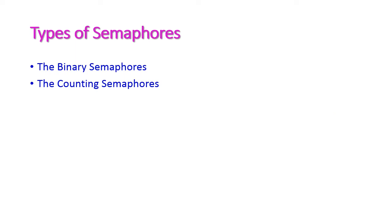Now let us see the types of semaphore. There are two types of semaphore. The first one is binary semaphore and the second one is counting semaphore. In binary semaphore, the semaphore value will be either 1 or 0 — only two values are accepted. In counting semaphore, the S value will be equal to the number of resources available in the critical section.